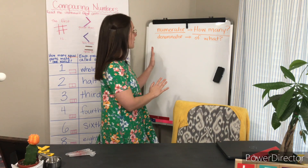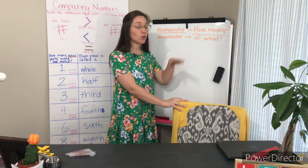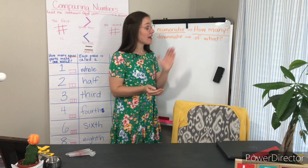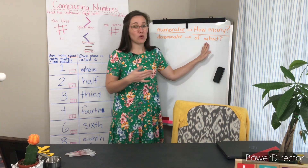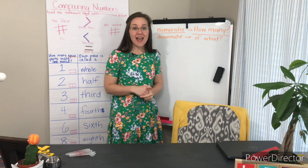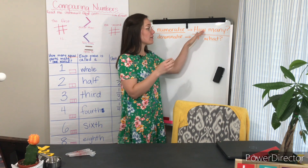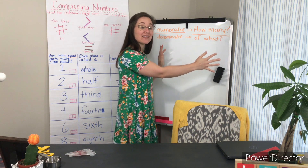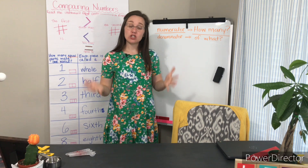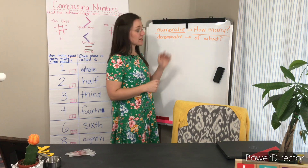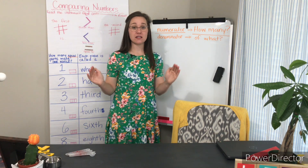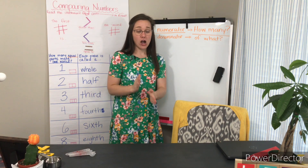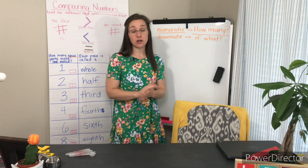Let's really quick look at what numerator and denominator mean. The numerator tells us how many pieces we're counting, and the denominator tells us what sort of pieces we're counting. Today we're going to be counting the same number of pieces in both fractions, but the type of pieces we have are going to change. Remember, the denominator tells us how many equal pieces we need to make one whole — how many equal pieces our whole has been partitioned into.